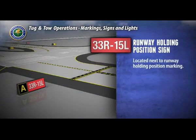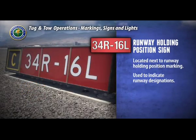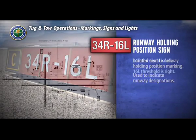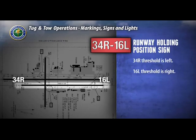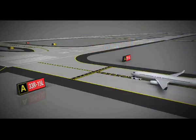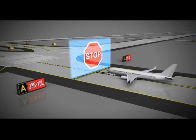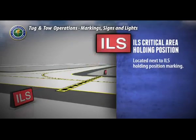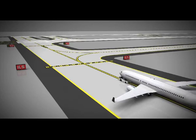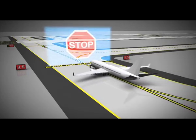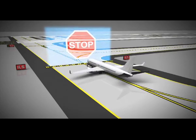The runway holding position sign is located next to the holding position markings on taxiways or runway intersections and indicates the runway designations. The runway numbers are separated by a dash, and their arrangement indicates the direction of the corresponding runway threshold. For example, the threshold for runway 34R is to the left and the threshold for runway 16L is to the right. If you approach this sign, stop and do not move beyond it until air traffic control clearance is granted. The ILS critical area holding position sign indicates that aircraft and vehicles will hold at this sign until clearance is given by ATC when the ILS is in use, as taxiing beyond this point may interfere with the ILS signal to approaching aircraft.